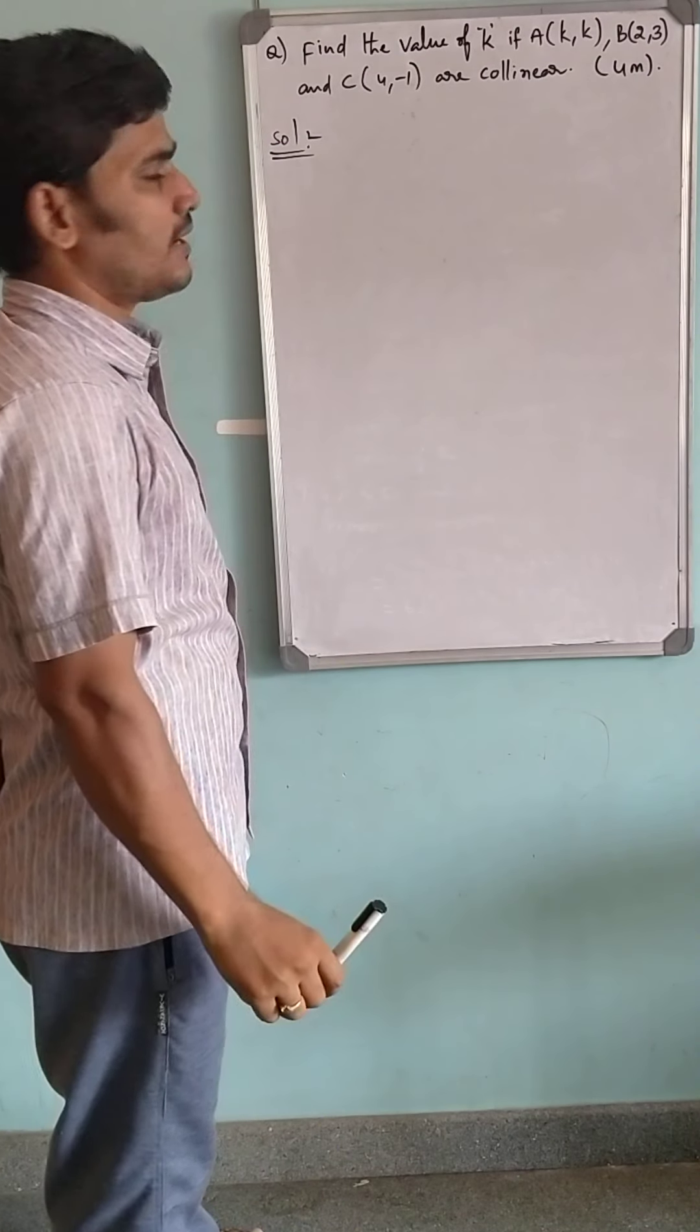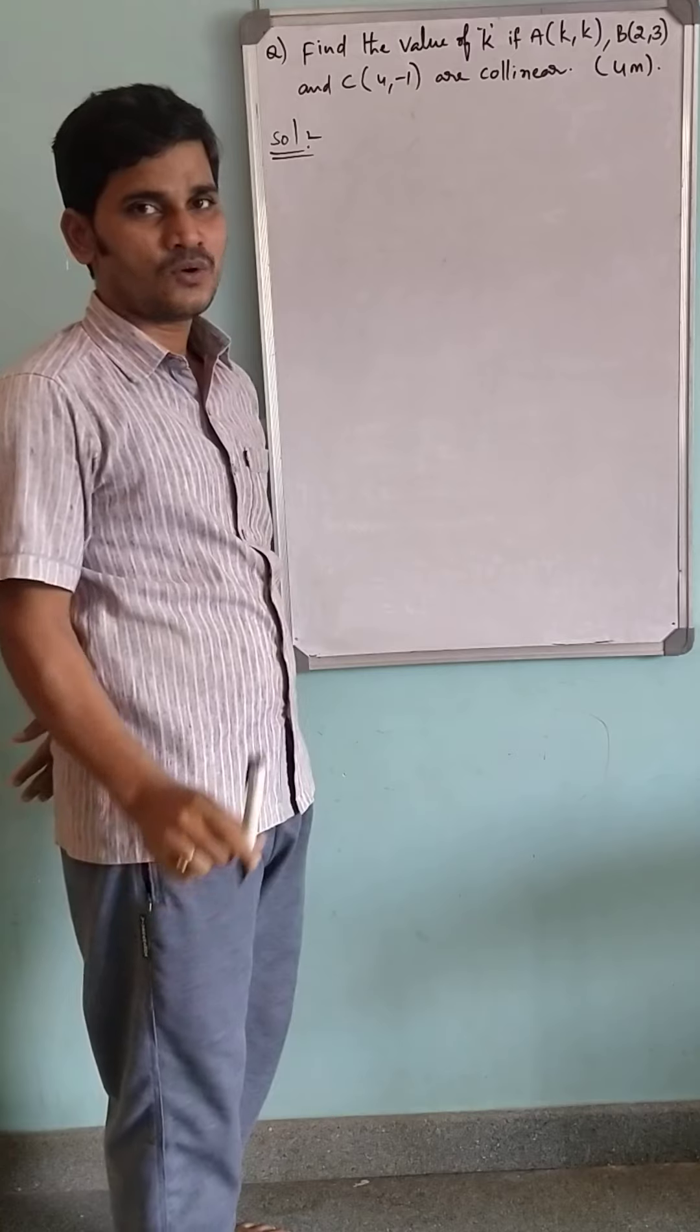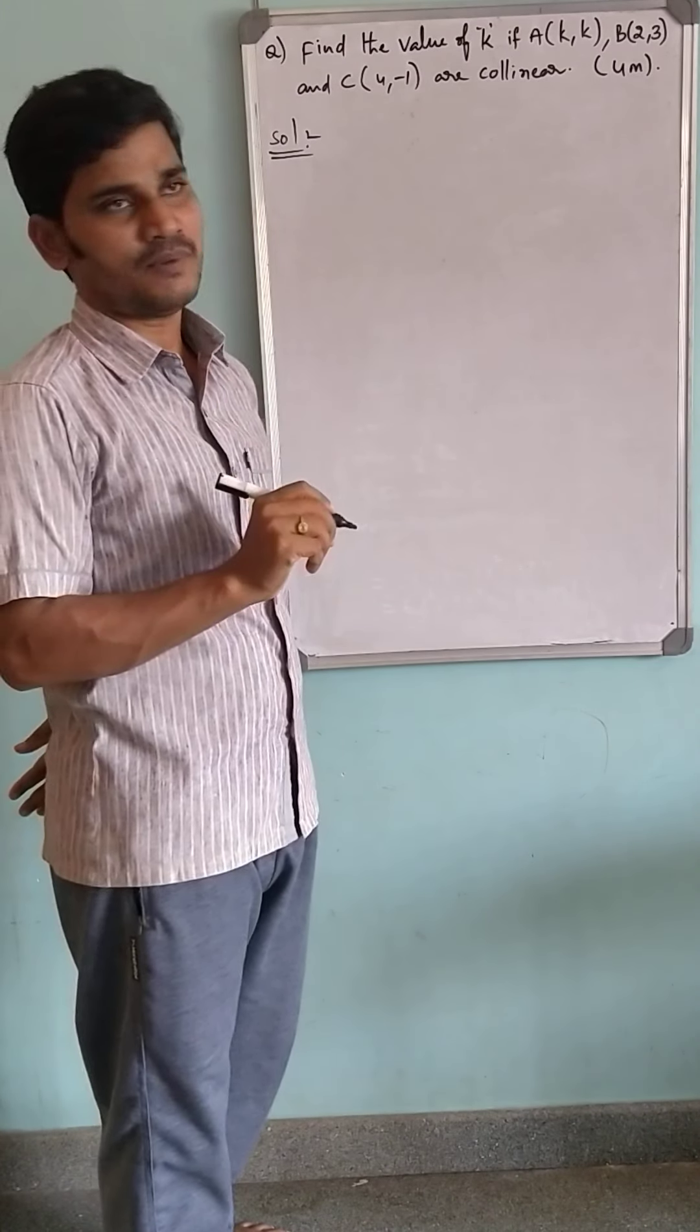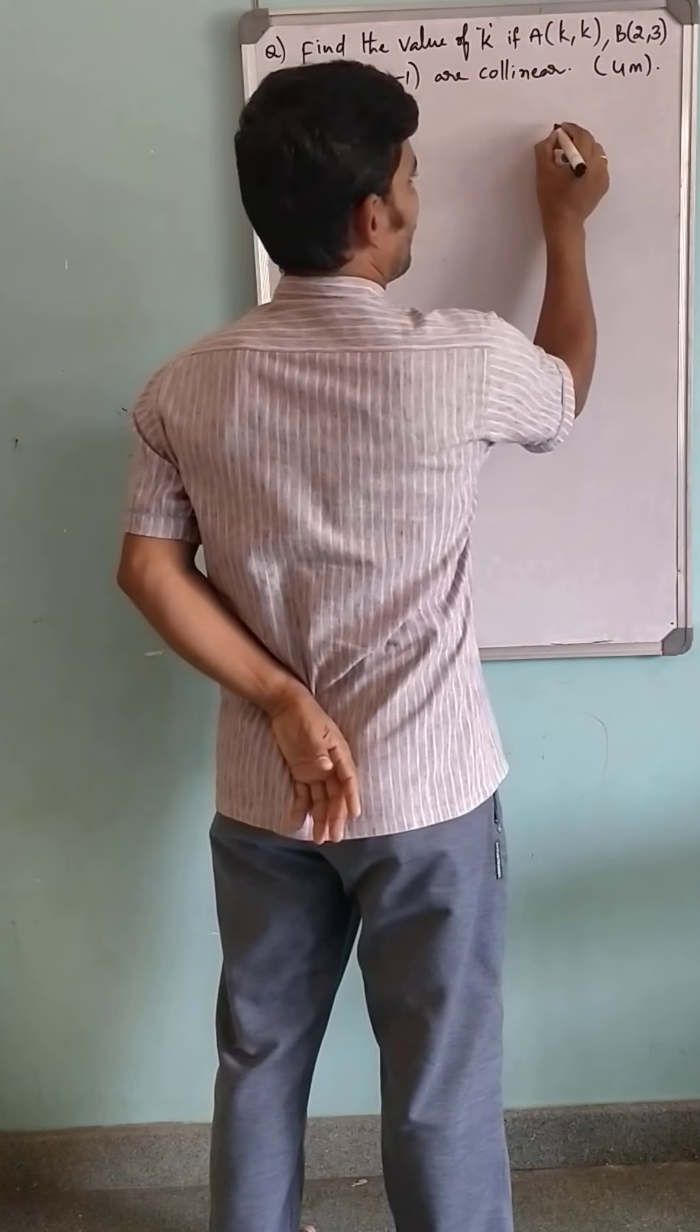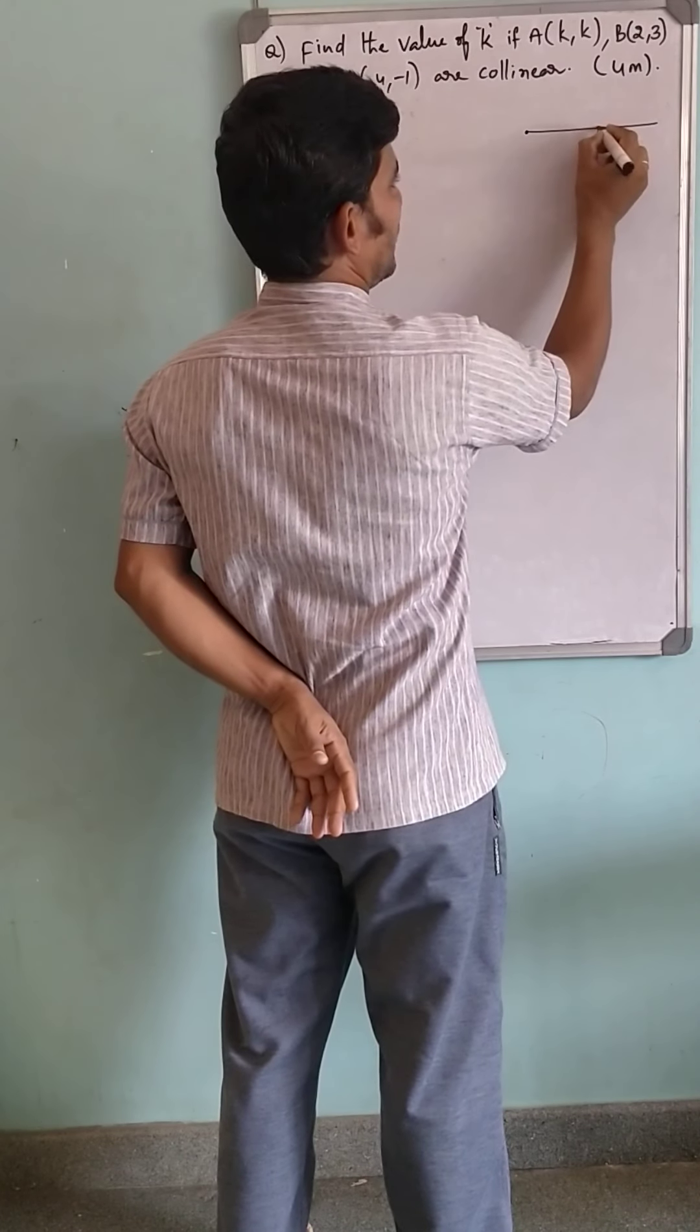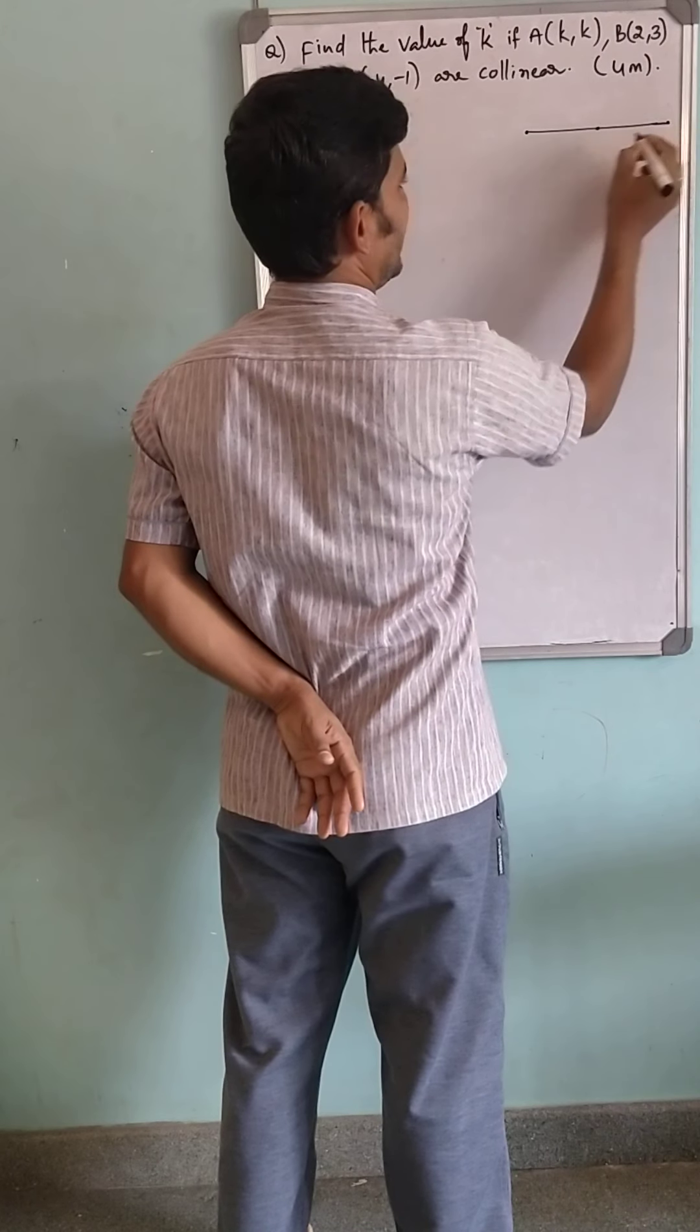What are collinear points? Collinear points are the points which are lying on the same line. That is, given three points, I have named them as A, B, and C.